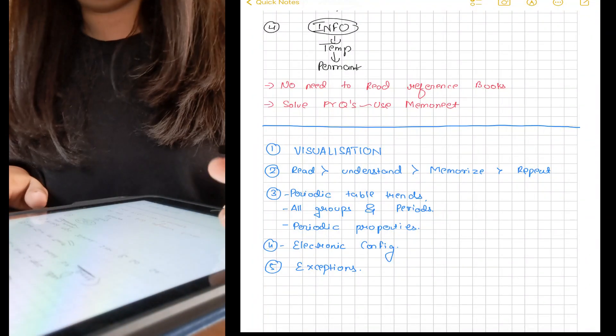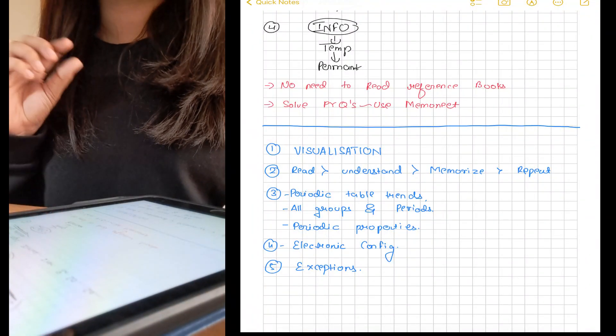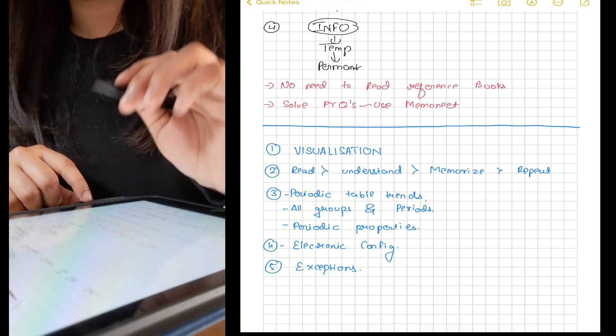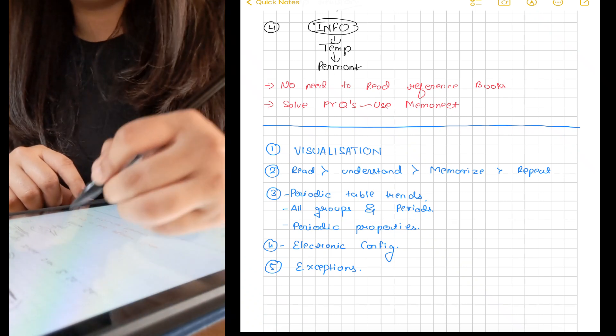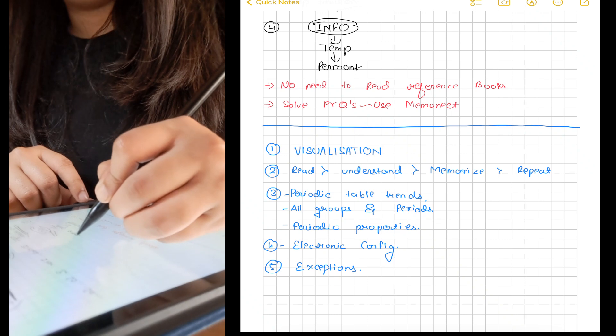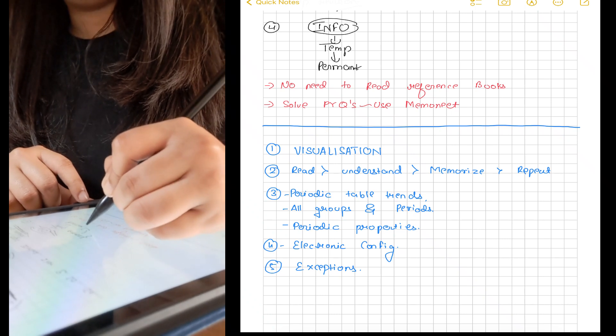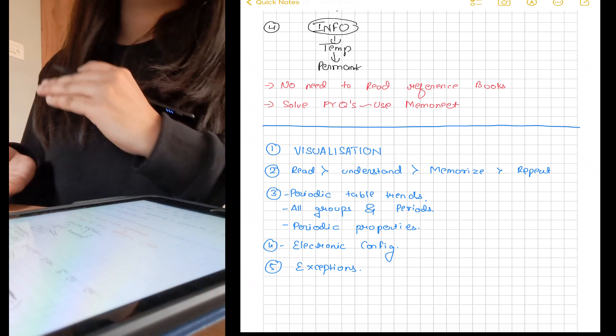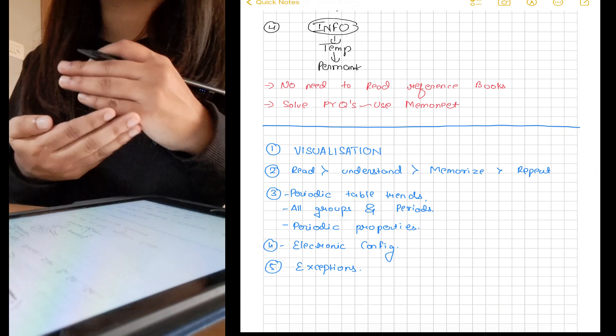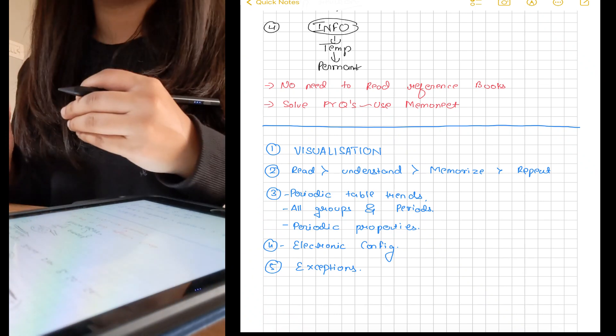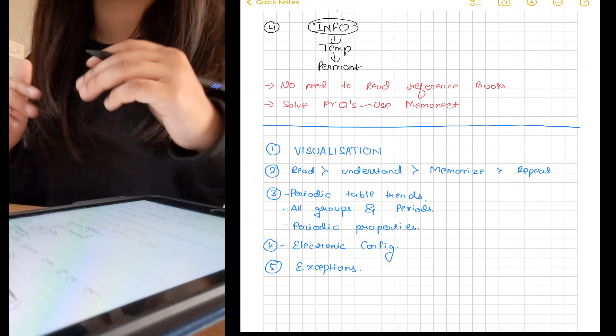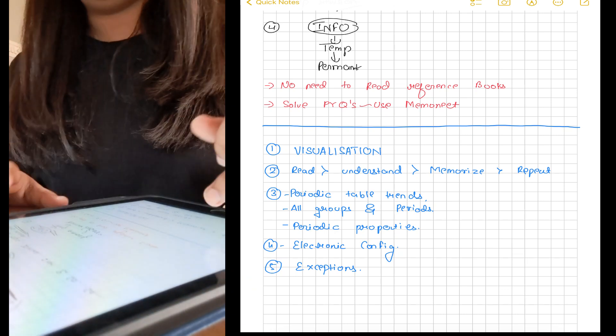Few things to keep in mind: First, in chemistry, visualization is important. Unless you can visualize each and every page of NCERT, you have to keep revising. Second, read, understand, memorize, and repeat. You never skip a single line of bio NCERT, then why not with chemistry too? Third, do periodic table trends very sincerely - all groups and periods.